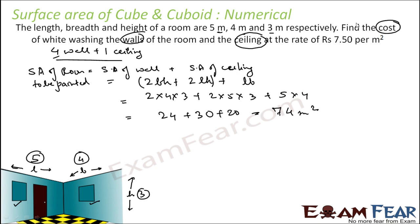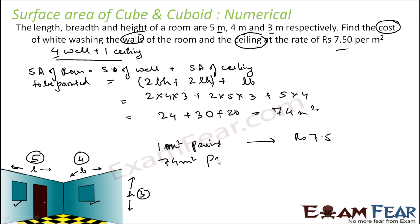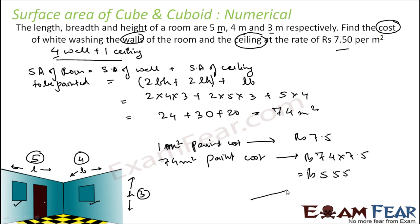Now we have to find the cost. It is given that 1 meter square costs ₹7.5 to paint. So for 74 meter square, the cost is 74 × 7.5 = ₹555. So ₹555 is required to paint this room.